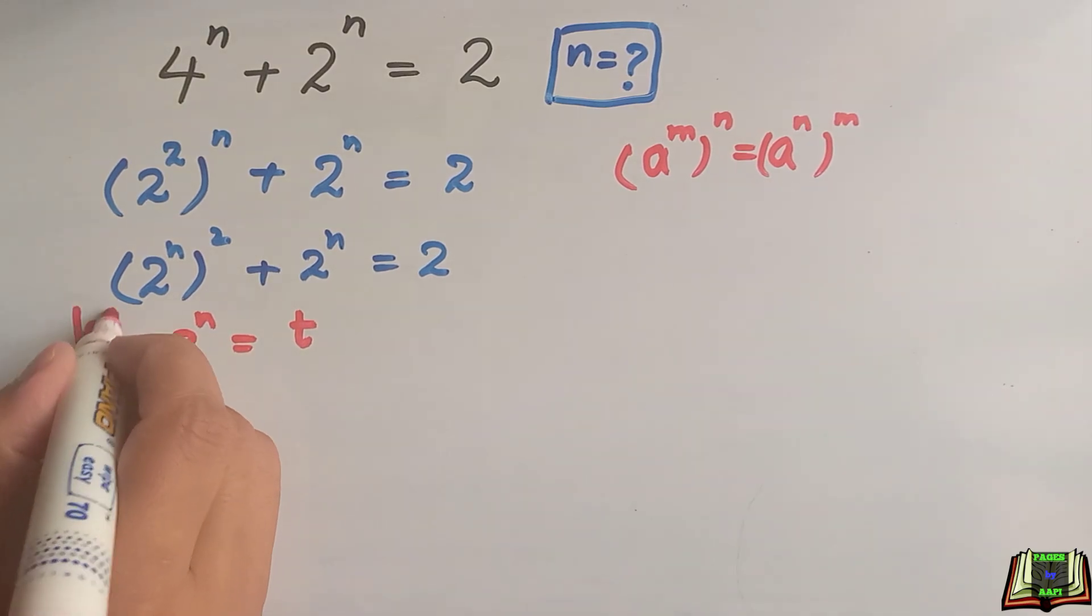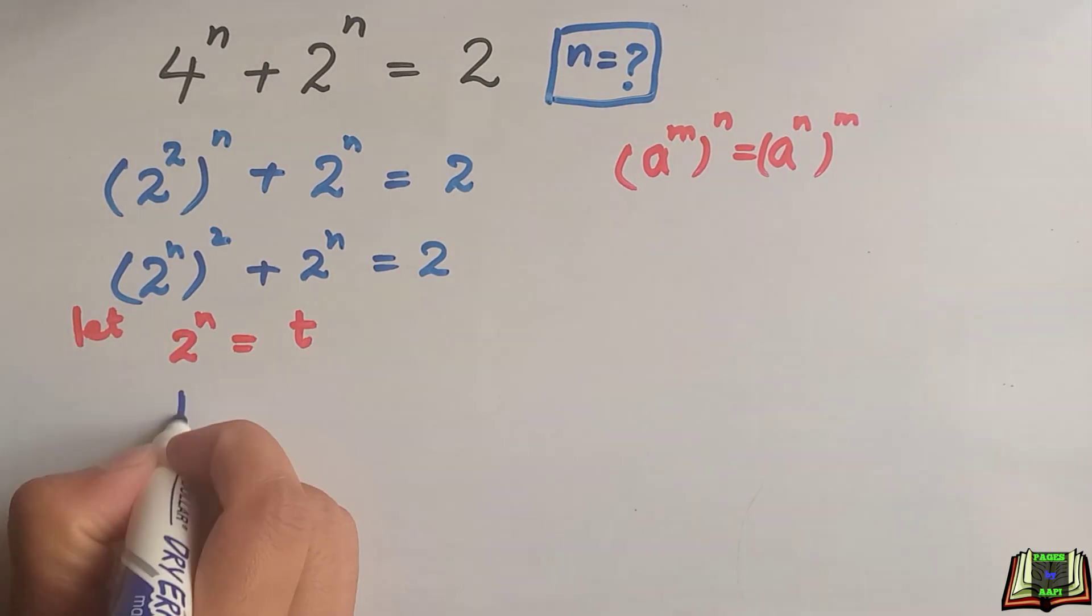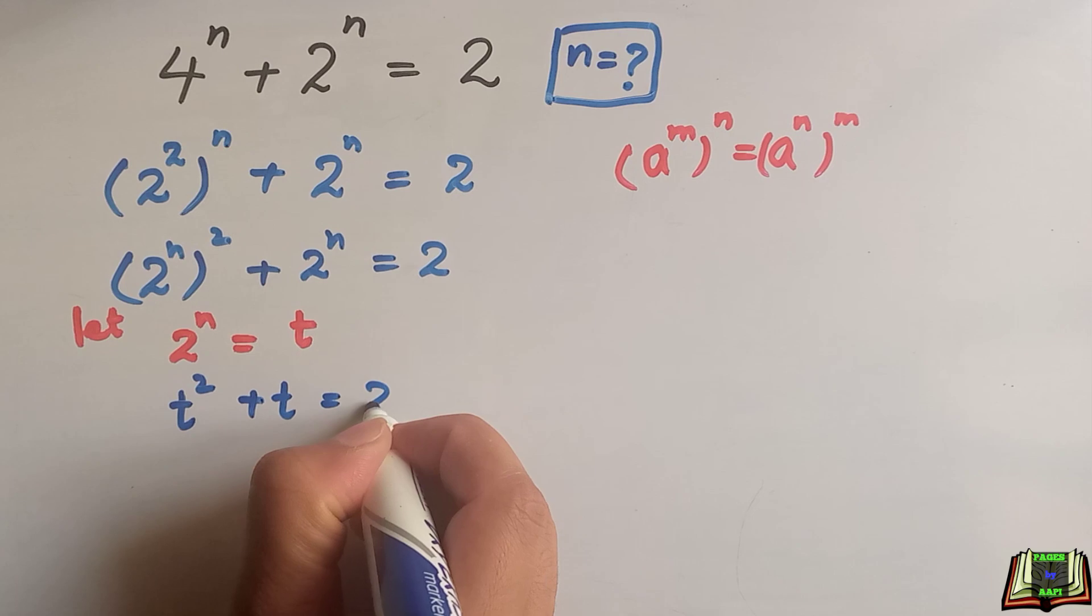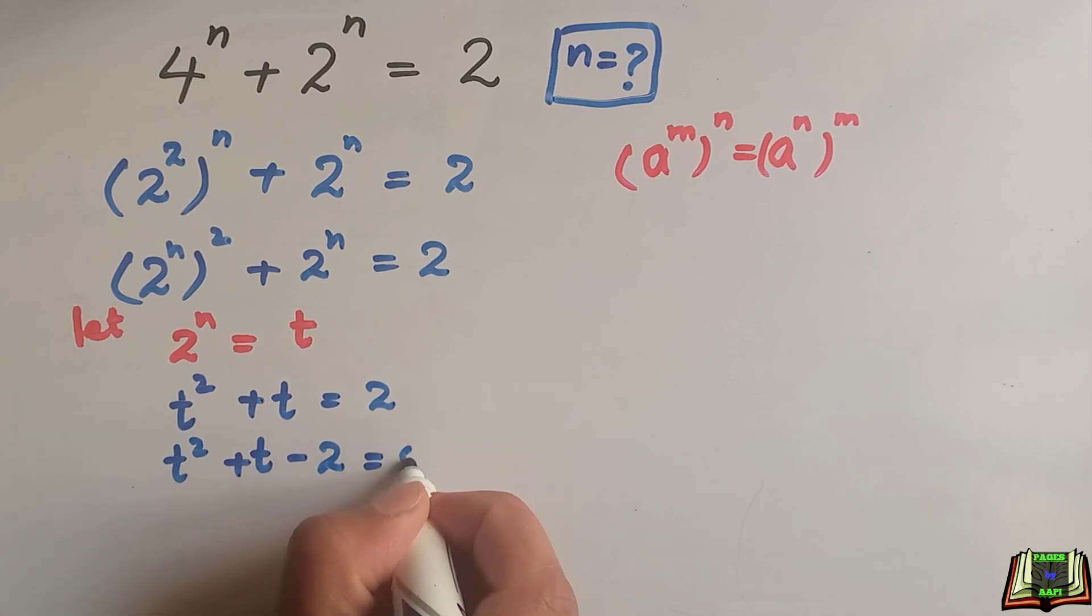So this equation will become t square plus t is equal to 2. In the next step we will take this 2 to the left hand side. So this will become minus 2 is equal to 0.